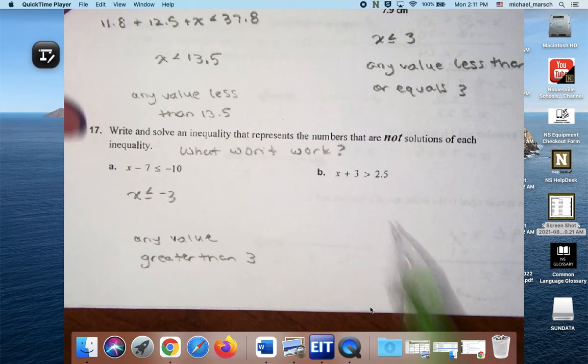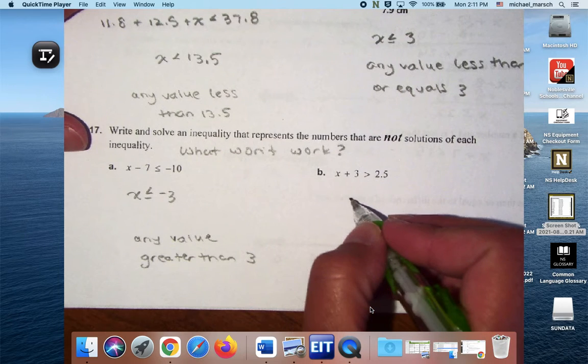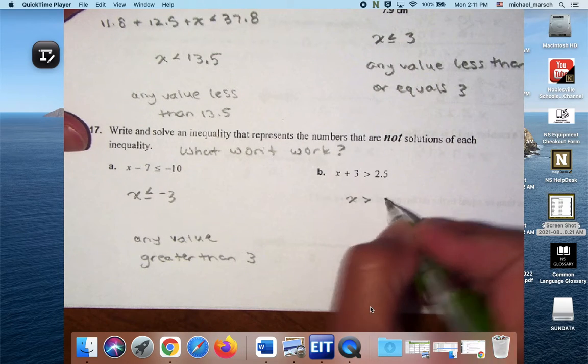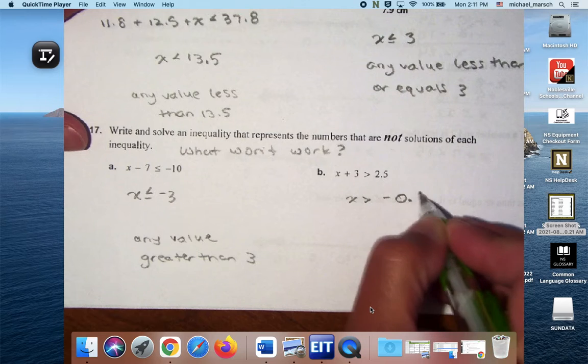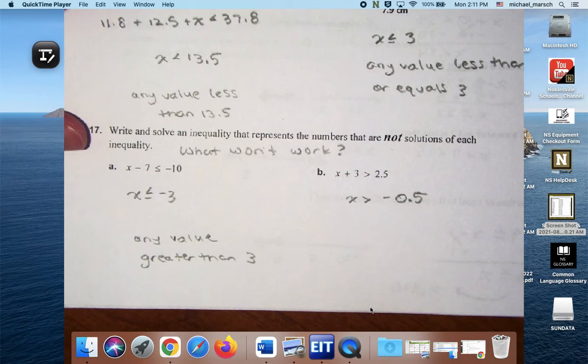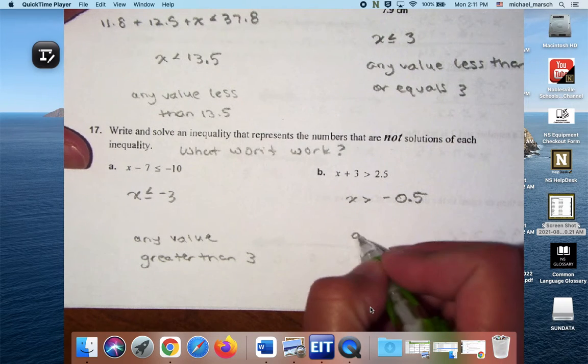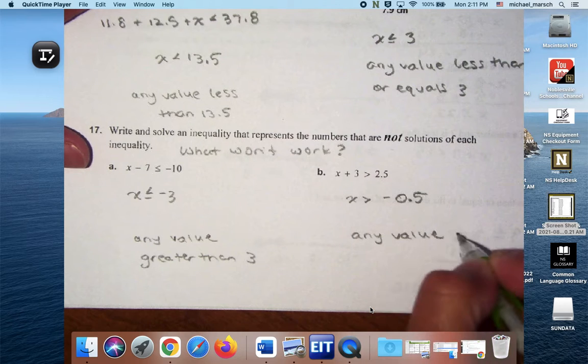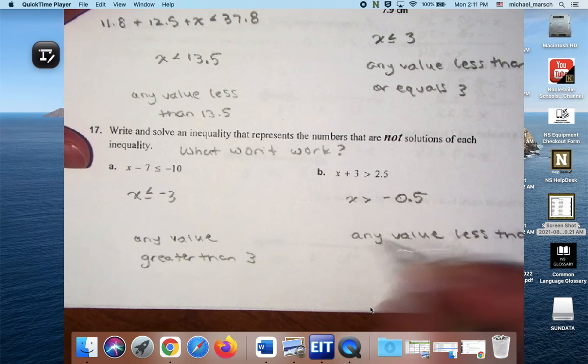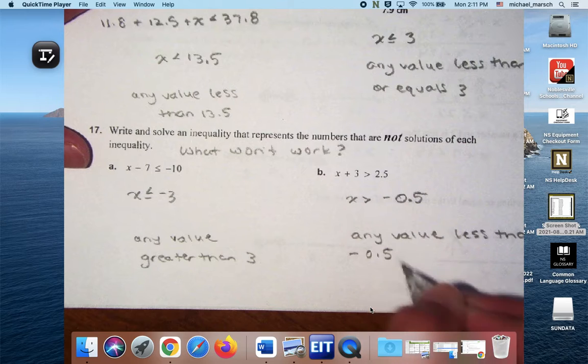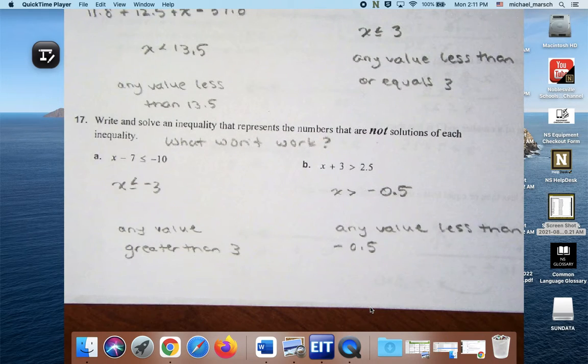And then for number 17, you get X is greater than negative 0.5. So what would be a not solution? Addison? Negative 7. Sure. Any value less than negative 0.5. So negative 7 would work, negative 4. Negative 0.5 would work because it can't be that number. Okay.